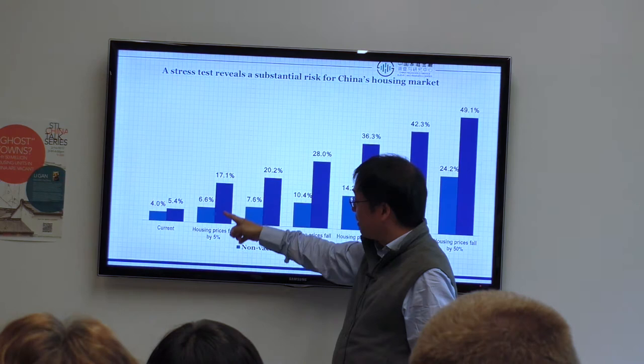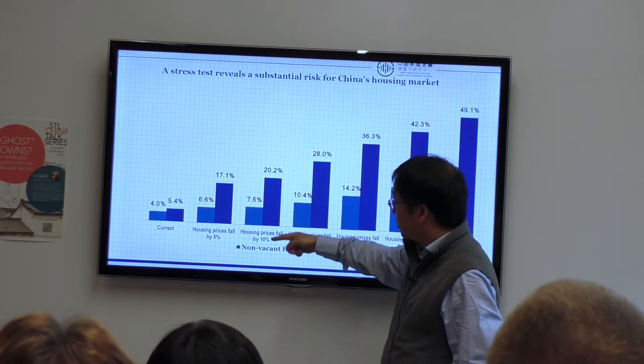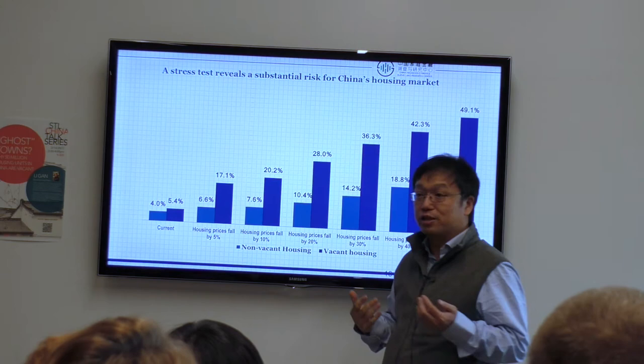If housing prices fall by 5%, 17% of the vacant houses will be worth less than their purchase price. If prices fall by 10%, 20% of vacant houses will be below purchase price.